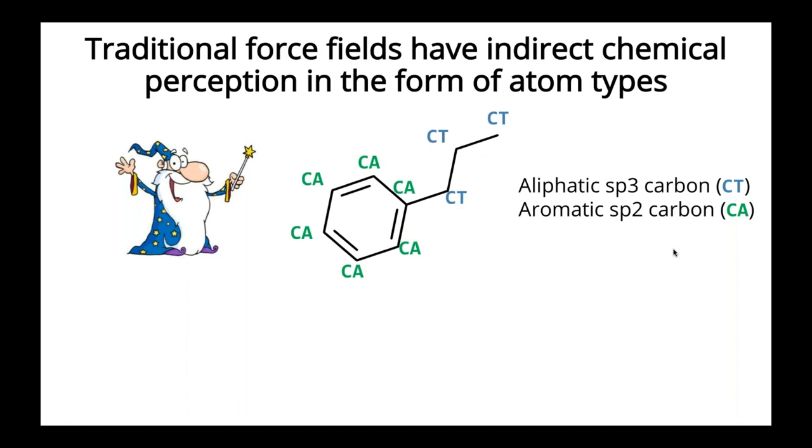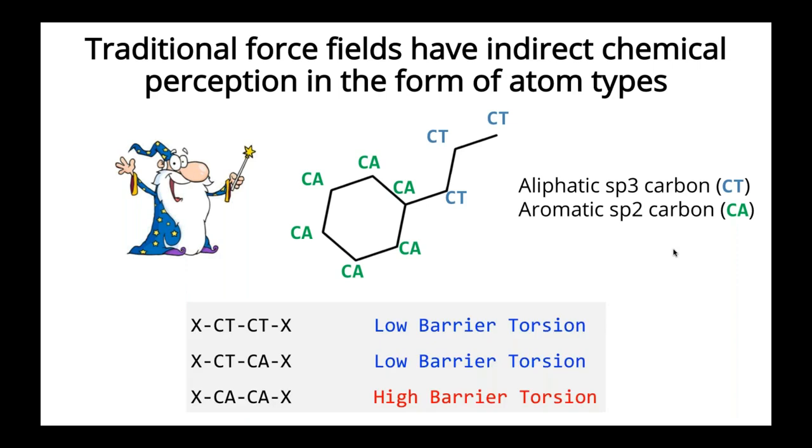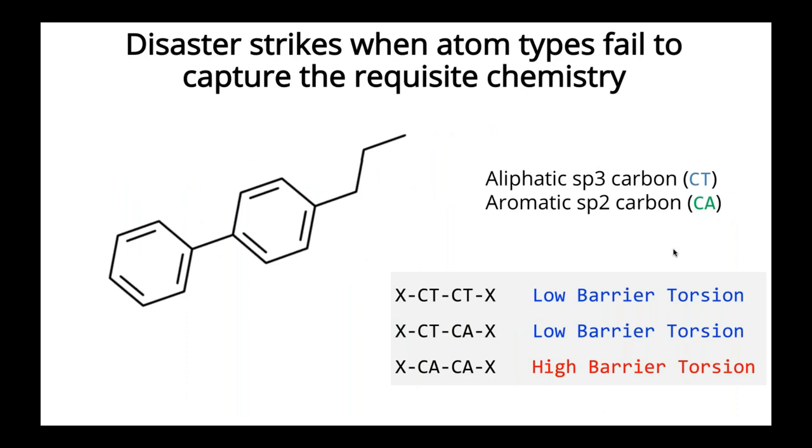Now in a traditional force field, that's the only information we would use, just atom types and the way that they're connected in order to assign parameters. So then those parameters would be assigned to those molecules. For example, the torsions around the aromatic bonds would have higher barriers for rotation, and the torsions on the single bonds would have lower barriers for rotation.